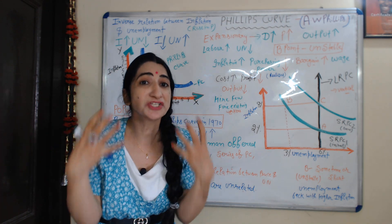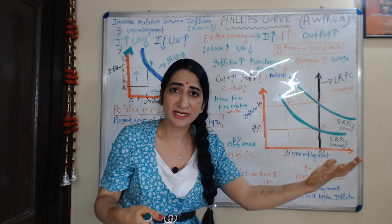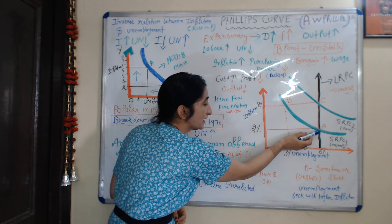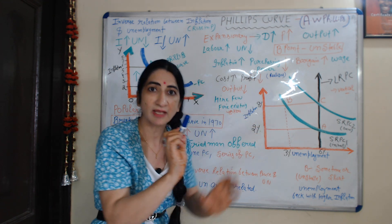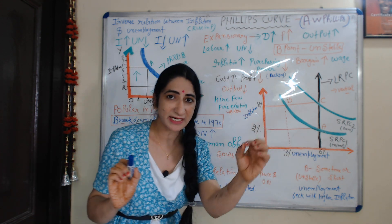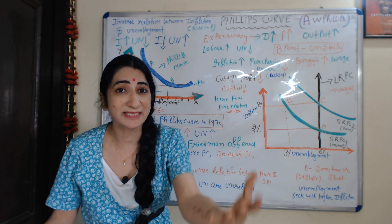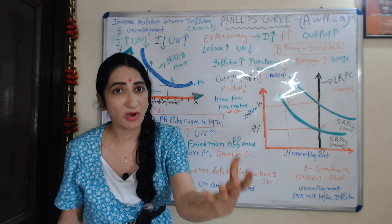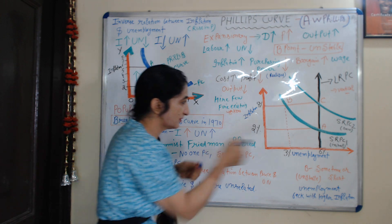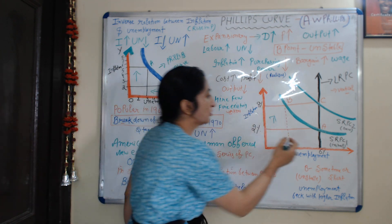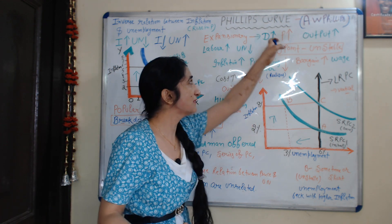To reduce the amount of unemployment, the government will implement expansionary policy. As the government implements expansionary policy, demand increases in the economy. As demand increases, price increases. As a result, our economy moves from point A to point B, where the rate of inflation increases from 2% to 8%, and unemployment has reduced from 6% to 3%.